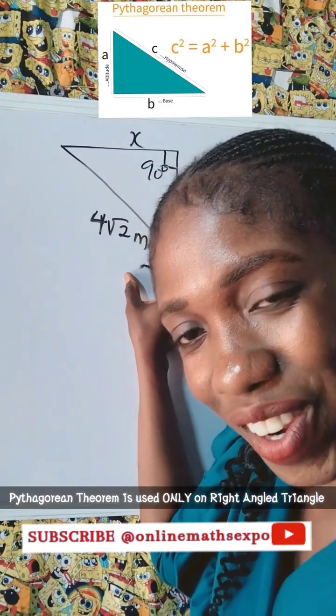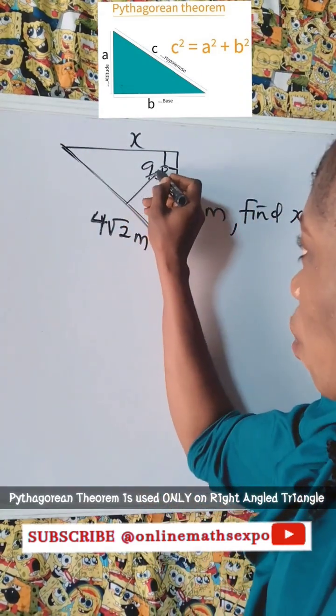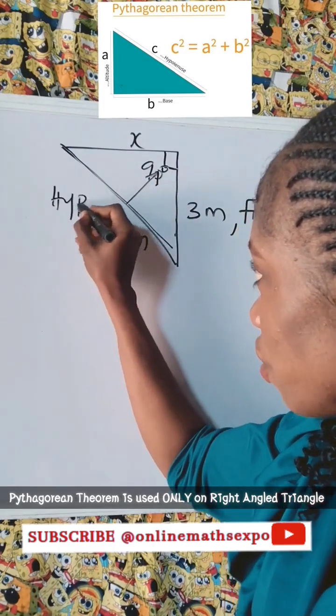So you use Pythagoras theorem. And remember, this is the longest side because it's also opposite to angle 90. We call it the hypotenuse.